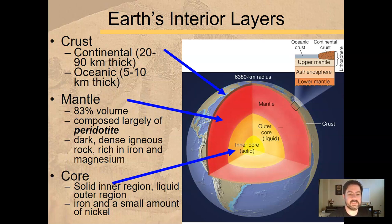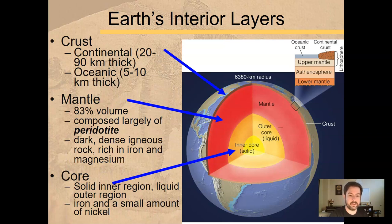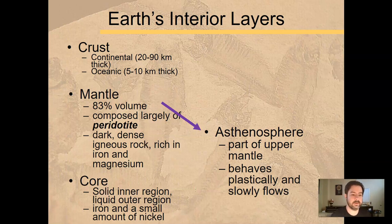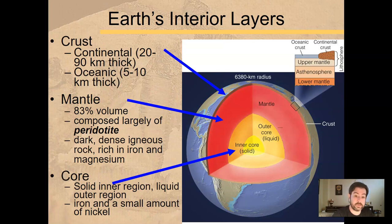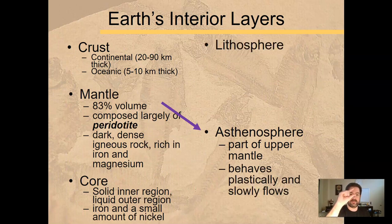There are a few additional terms to talk about. We have a layer called the asthenosphere. The asthenosphere is part of the upper mantle. The mantle is this big volume chunk in the Earth's interior — the upper part of that is called the asthenosphere, the very upper part. We have the lower mantle, and the very upper mantle is called the asthenosphere. It behaves plastically and slowly flows — again, that moving-around type material. Then we have the lithosphere, which is another portion of the upper mantle as well as the crust. The asthenosphere is part of the upper mantle, and the other part of the upper mantle plus the crust makes up the lithosphere — the solid part of the upper mantle and the crust.